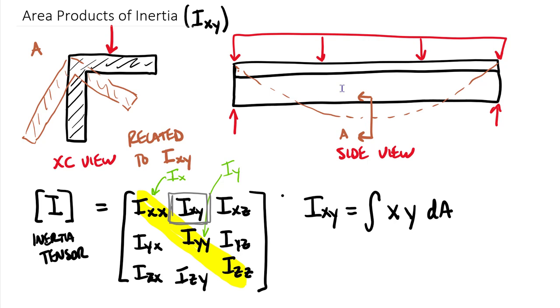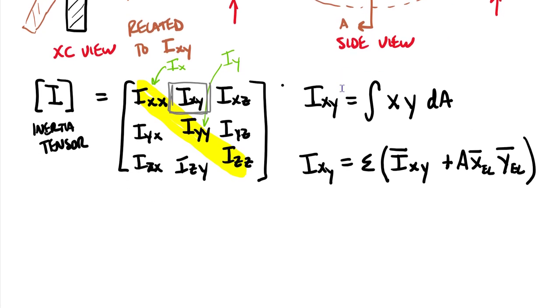If we write the parallel axes theorem form of the product of inertia equation, that is going to be Ixy equals the sum for composite bodies, including all the different bodies making up a system. We have our product of inertia about the centroid plus our parallel axis theorem piece, which is the area of each part times the distance to the centroid of each element in the x direction and the distance to the centroid of each element or each part in the y direction. Instead of x squared y squared, we're simply multiplying x times y.